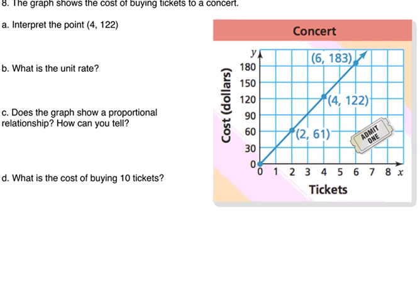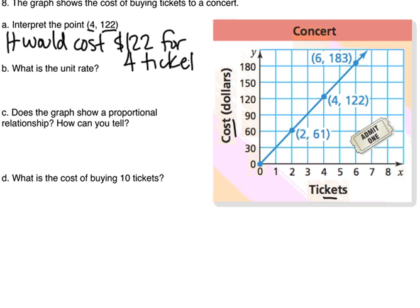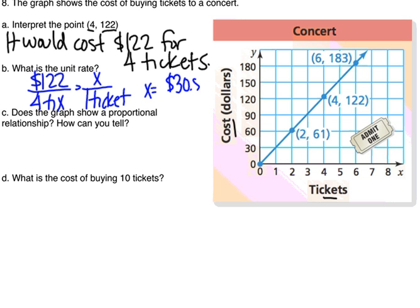Next we have a proportional relationship shown in the graph for the cost of buying tickets to a concert. Part A says to interpret the point. Interpret tells you to say what the numbers represent in terms of the graph. 122 is going to represent your cost, and 4 is going to represent the number of tickets. So it would cost $122 for 4 tickets. We can then use that to calculate our unit rate. It is $122 for 4 tickets, and so we want to find the cost for 1 ticket. We're going to do 122 divided by 4. When we do that, we get a unit cost of $30.50 per one ticket.